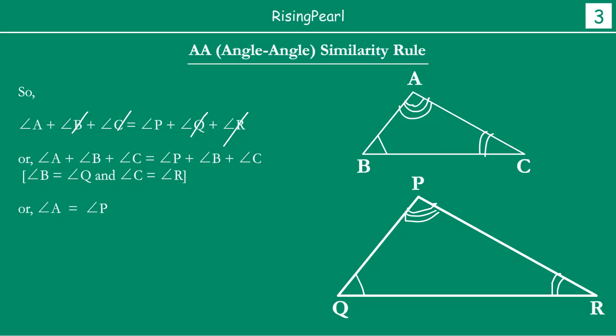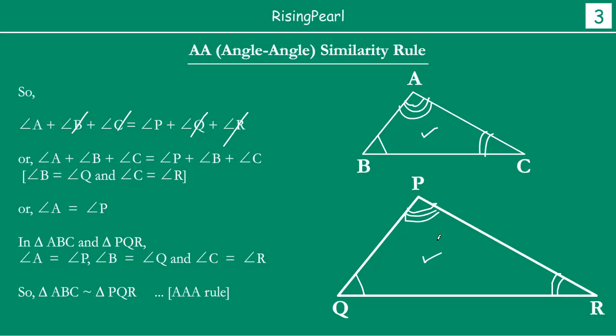So now we have two triangles ABC and PQR such that all three corresponding angles are equal. We can say that these two triangles are similar by the AAA similarity rule, which we just learned in the last webisode. This is how, if two angles are given (AA), you can say two triangles are similar — which is what we proved in this webisode. In the last webisode we proved that if three angles of one triangle are equal to their corresponding angles in the other triangle, then both triangles are similar.